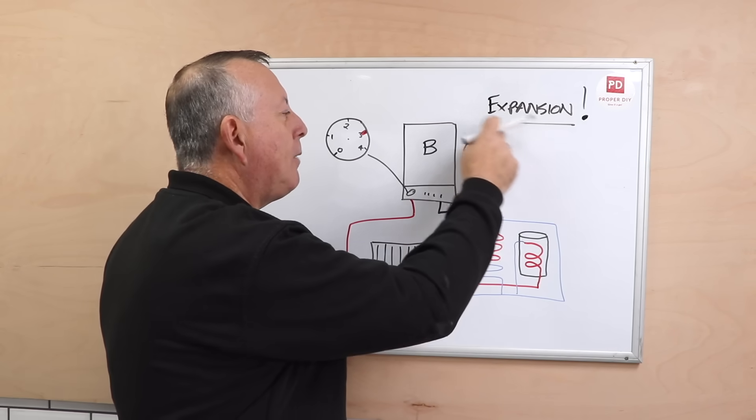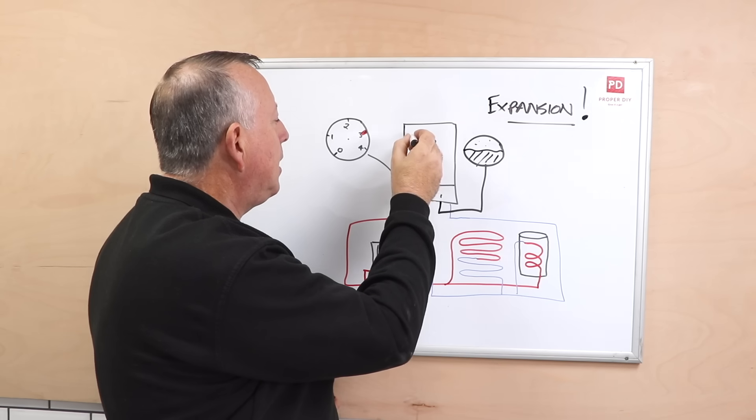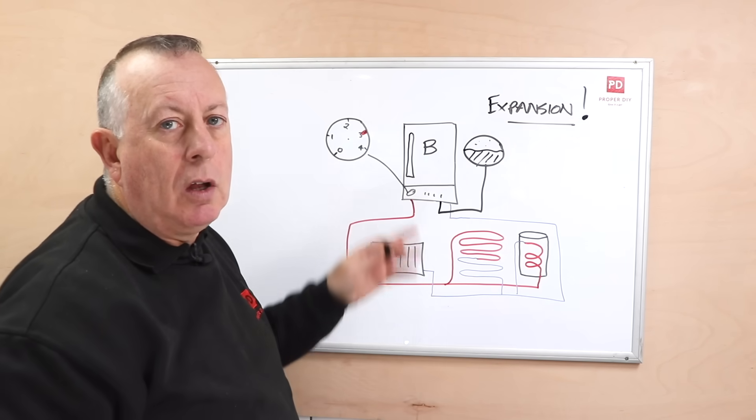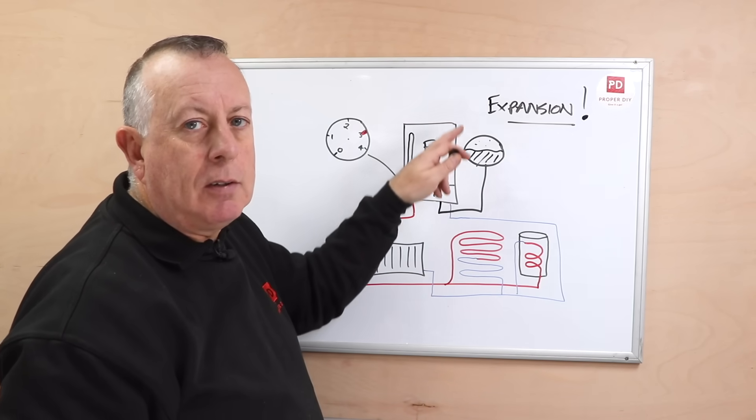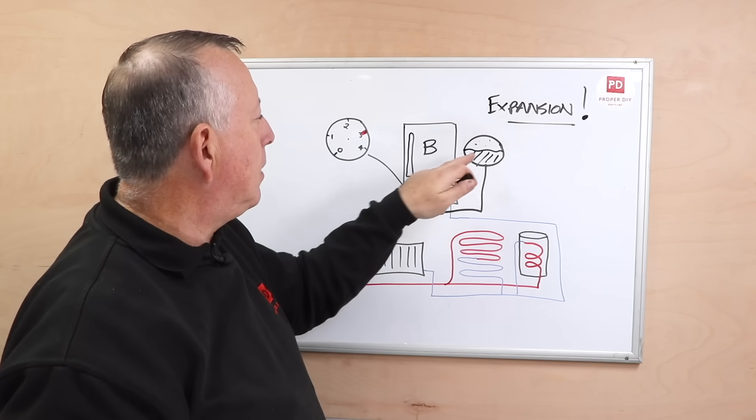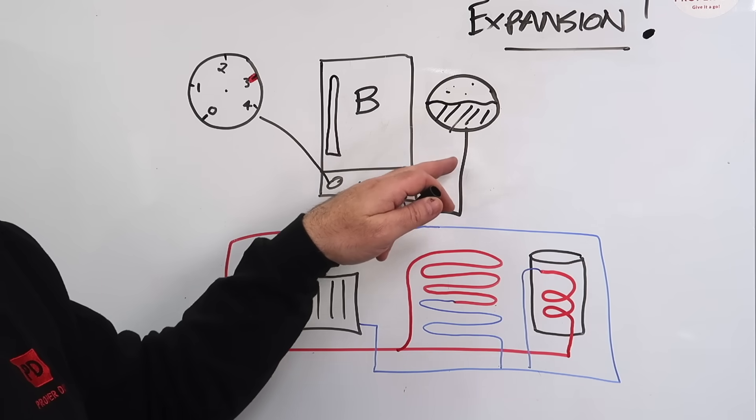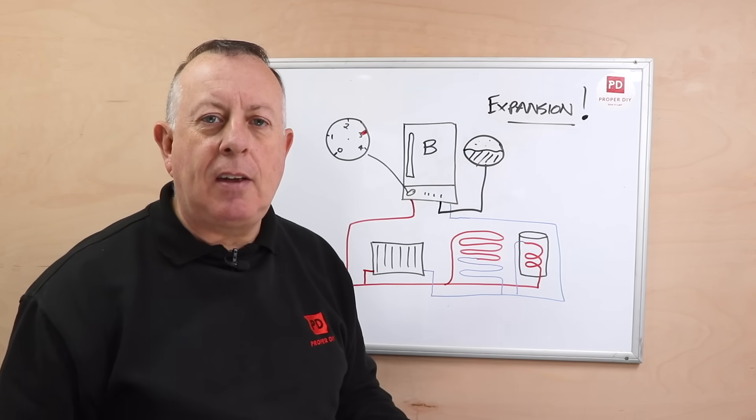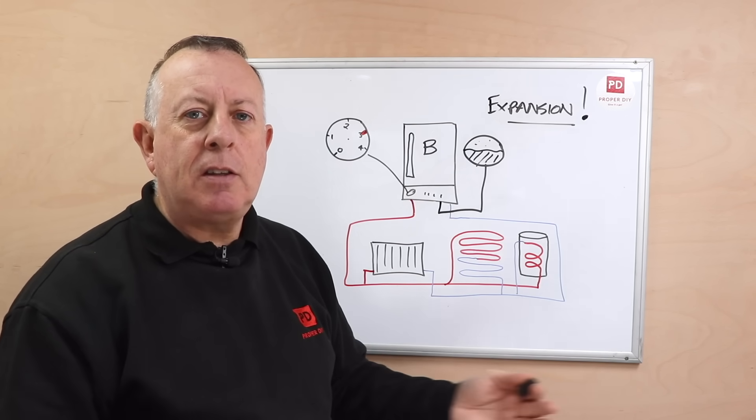Generally if you've got a bigger central heating system you'll have one on the outside, and generally most boilers will have a small one on the inside, but that's really only designed for the expansion of the boiler. If you've got a bigger central heating system you'll also have a separate expansion tank.